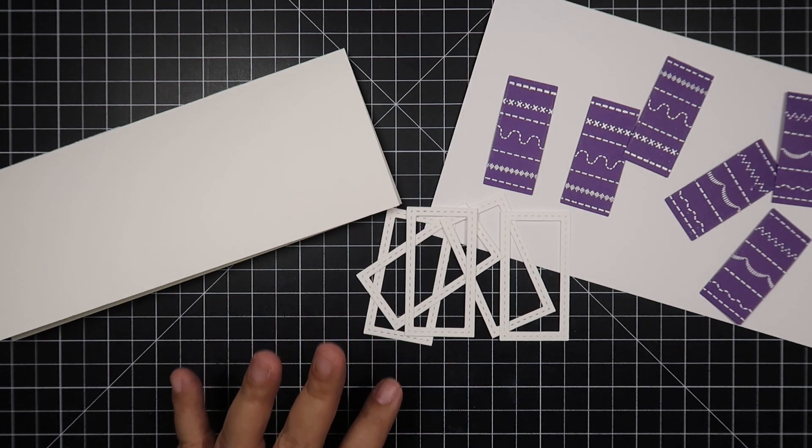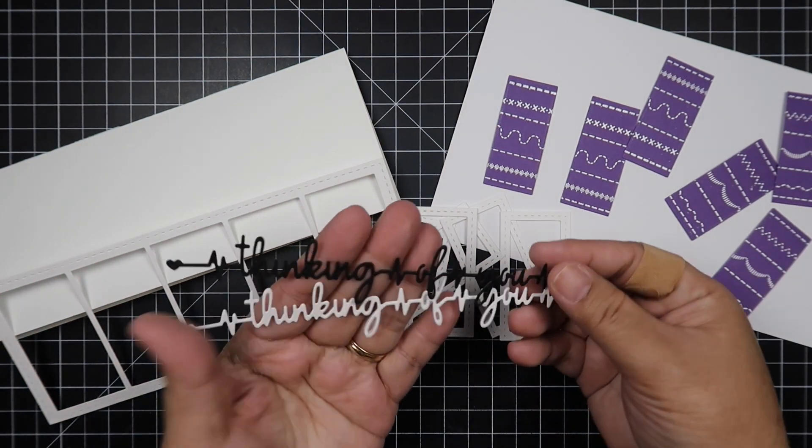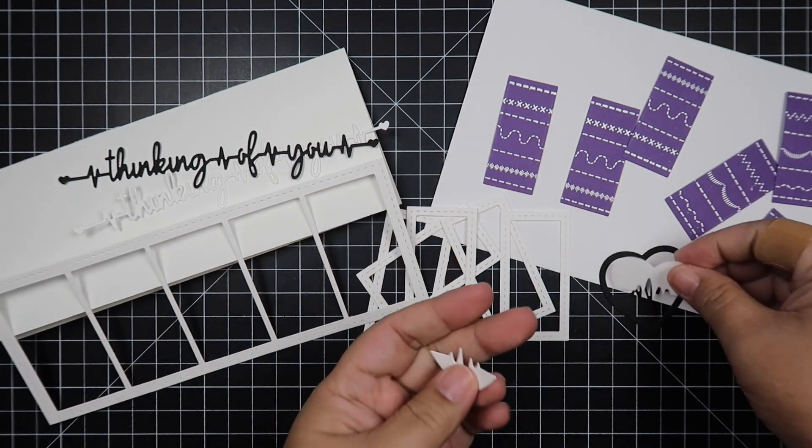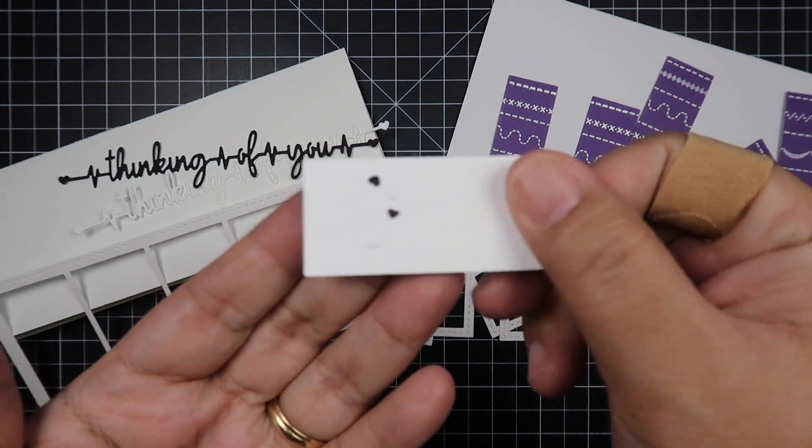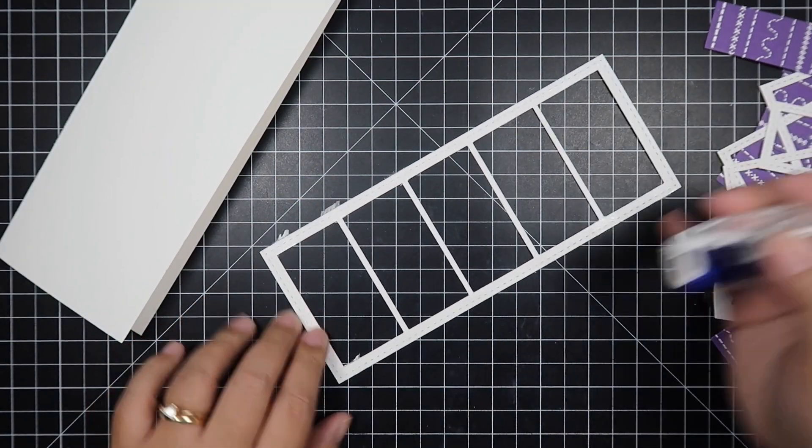Here are all the elements that I already die cut. I have my card base, my words that I die cut with black and white cardstock, my heart, and don't forget—don't lose those little tiny hearts for the eyes.